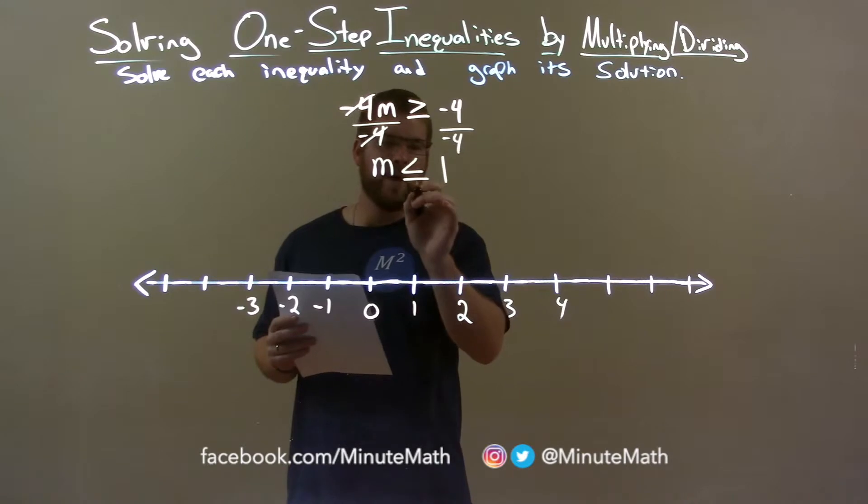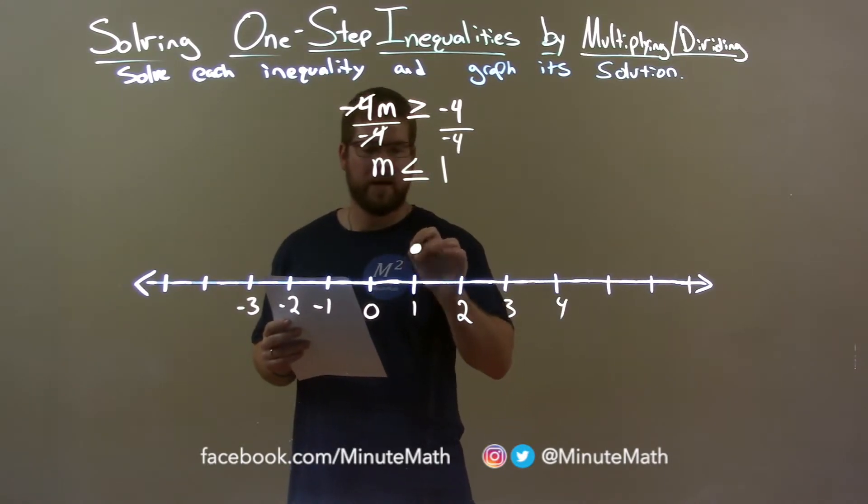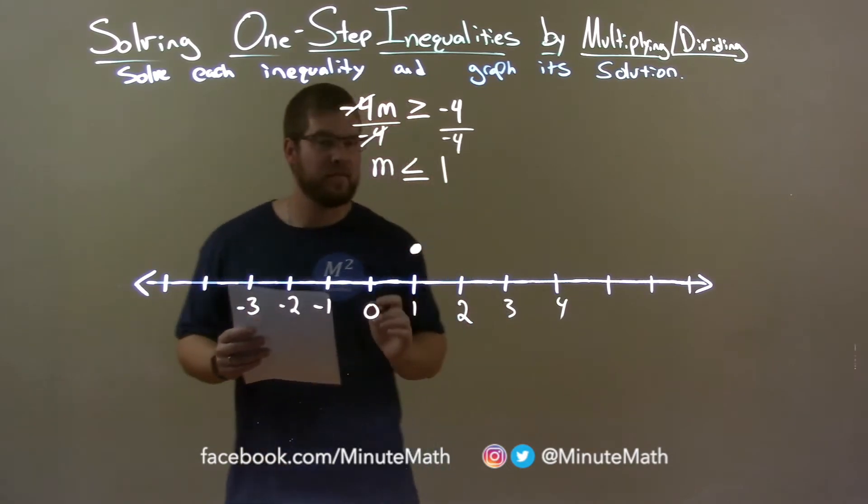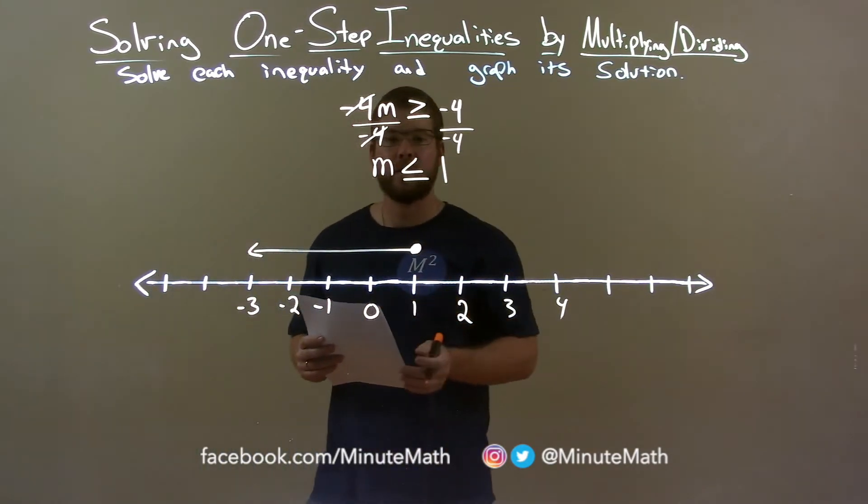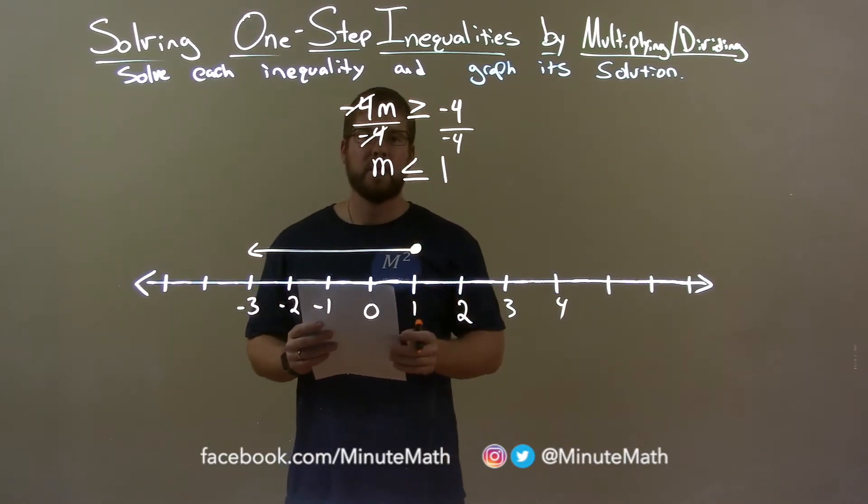Closed circle is when it's equal to. Since m is equal to 1, put a closed circle right here at 1. m is less than 1 as well, so the arrow goes to the left. And there we have our final answer: m is less than or equal to 1.